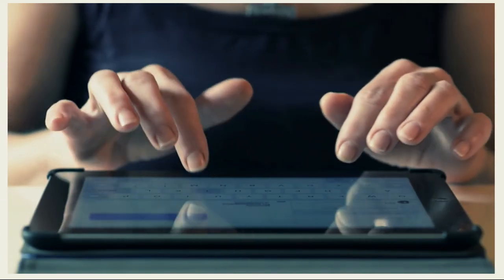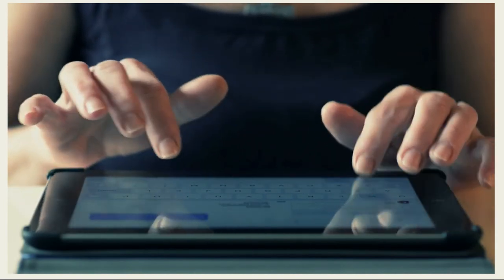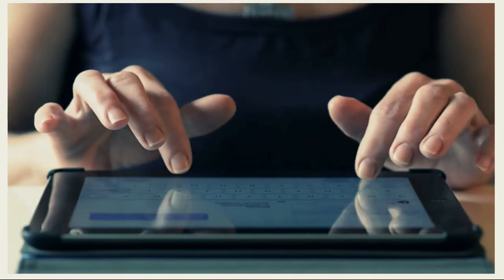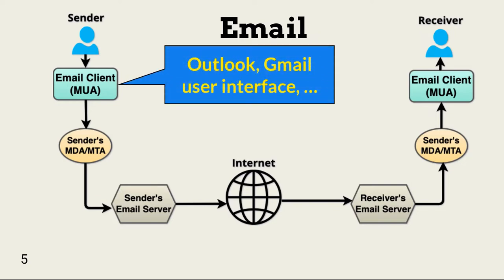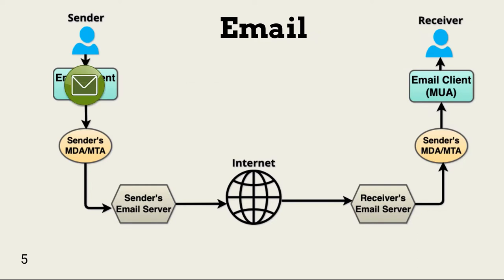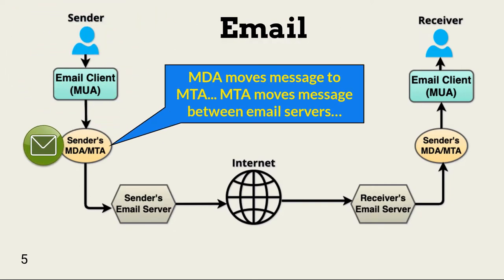Email is considered by many organizations to be the most important communication medium they have. It is also the preferred attack vector for many threat actors. Let's walk through how email works. The user uses a mail user agent, or MUA, like Outlook, to create a message. Once the sender clicks Send, the MUA transfers the message to a mail delivery agent, or MDA. MDA is an umbrella term for software that manages email delivery between message transfer agents, or MTAs.